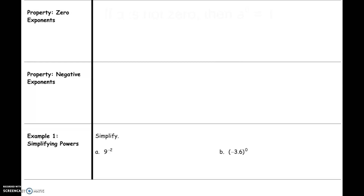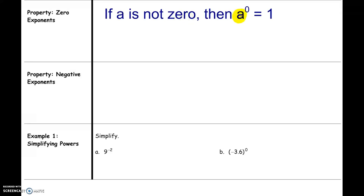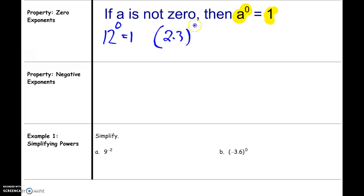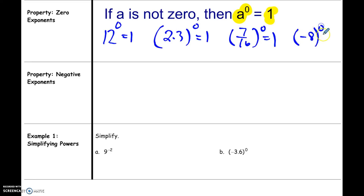That's the zero exponents definition: if a is not zero, any number raised to the zero power will always equal one. For example, twelve to the zero power equals one, two point three to the zero power equals one, seven sixteenths to the zero power equals one, and even negative eight to the zero power equals one. Notice that the number in parentheses — everything inside being raised to the zero power — is why this last one ends up being positive one. We'll look at that in more detail later.